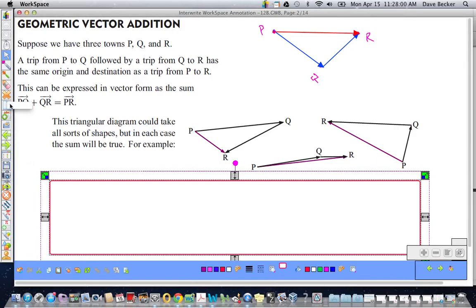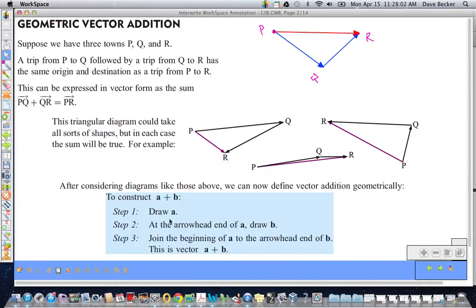And then, if we take a look here, we have a bit of a definition. If we look at these diagrams, if I'm going to construct the vector A plus B, I draw vector A. And at the arrowhead of A, I start my drawing of B. And then, the start of A to the end of B gives me the vector A plus B.